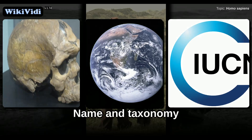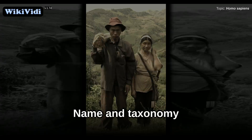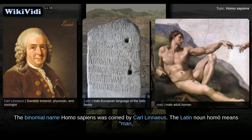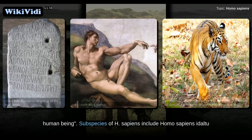Name and taxonomy. The binomial name Homo sapiens was coined by Carl Linnaeus. The Latin noun Homo means 'man' or 'human being.'